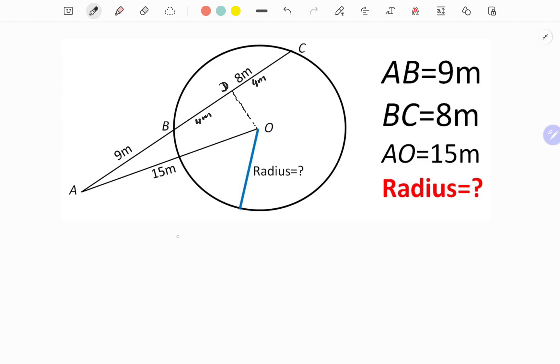Let we call this point as D. BD length is 4 meters, also CD length is 4 meters.